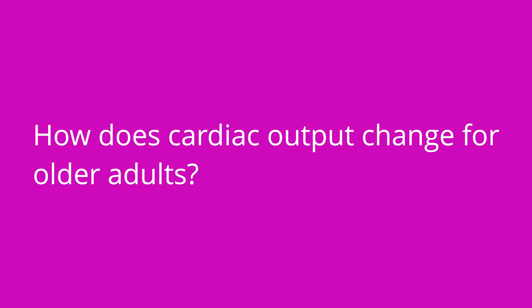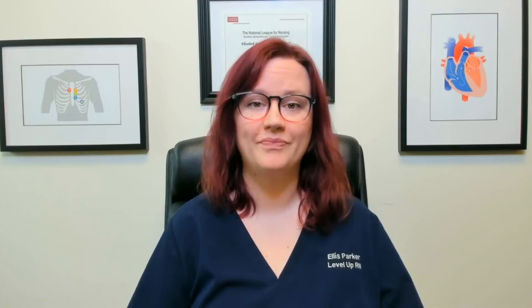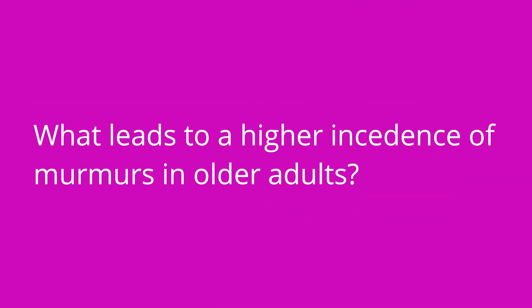In what way does cardiac output change for an older adult? Cardiac output decreases due to the decrease in efficacy and strength of the cardiac muscles. What leads to a higher incidence of murmurs in older adults? Incomplete valve closure.